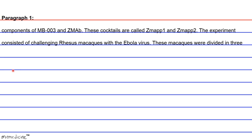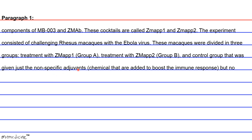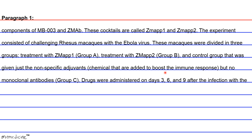The experiment consisted of challenging rhesus macaques with the Ebola virus. These macaques were divided into three groups: Group A received treatment with ZMAB1, Group B received treatment with ZMAB2, and Group C was the control group that was given just the nonspecific adjuvants — chemicals added to boost the immune response.